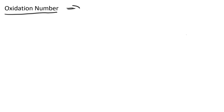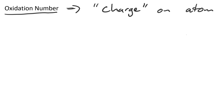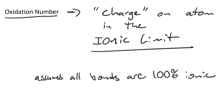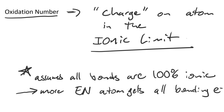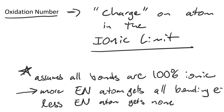This video tells you how to assign oxidation numbers. You can think of oxidation number as being the charge on an atom. Why is the word charge in quotes? Because we're imposing an artificial limit called the ionic limit. In the ionic limit, we assume that all bonds are 100% ionic. This means that the more electronegative atom gets all of the bonding electrons, and the less electronegative atom gets none.